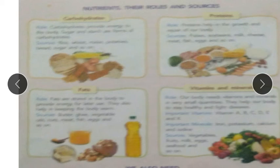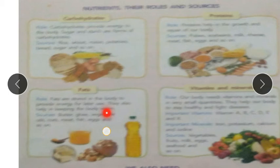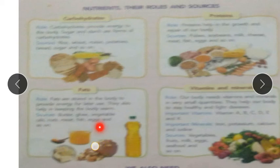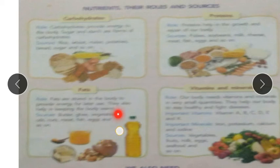Next is fat. Fats are stored in the body to provide energy for later use. They also help in keeping the body warm. Sources of fat include butter, ghee, vegetable oil, nuts, meat, fish, eggs, and so on. By eating these food items, you are storing fats in the body, which provides energy later.